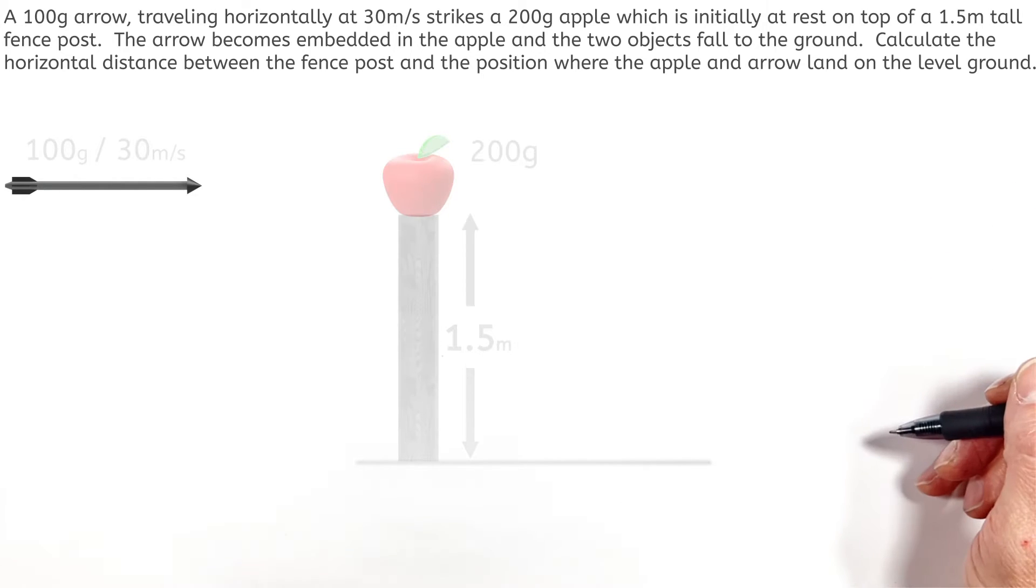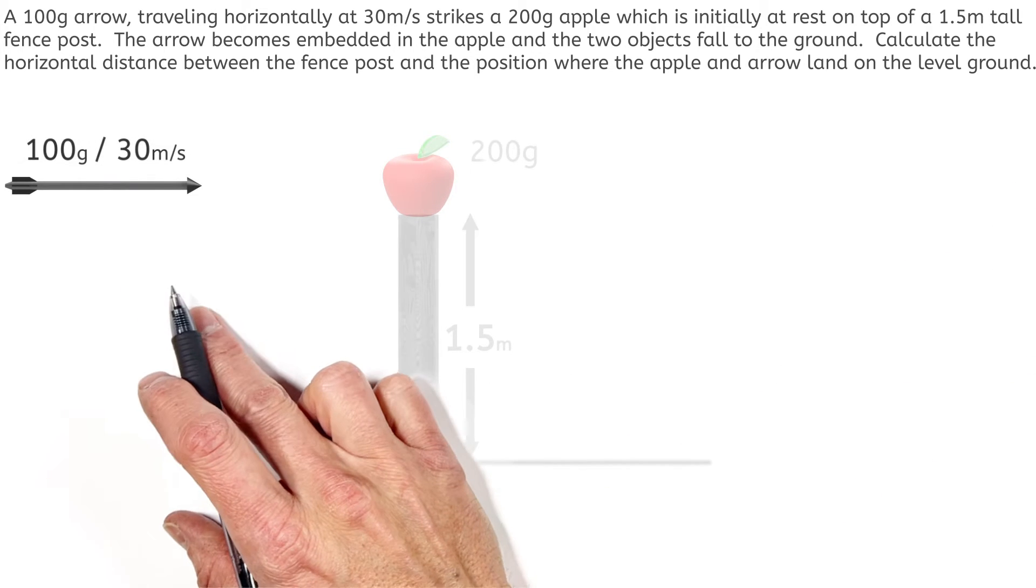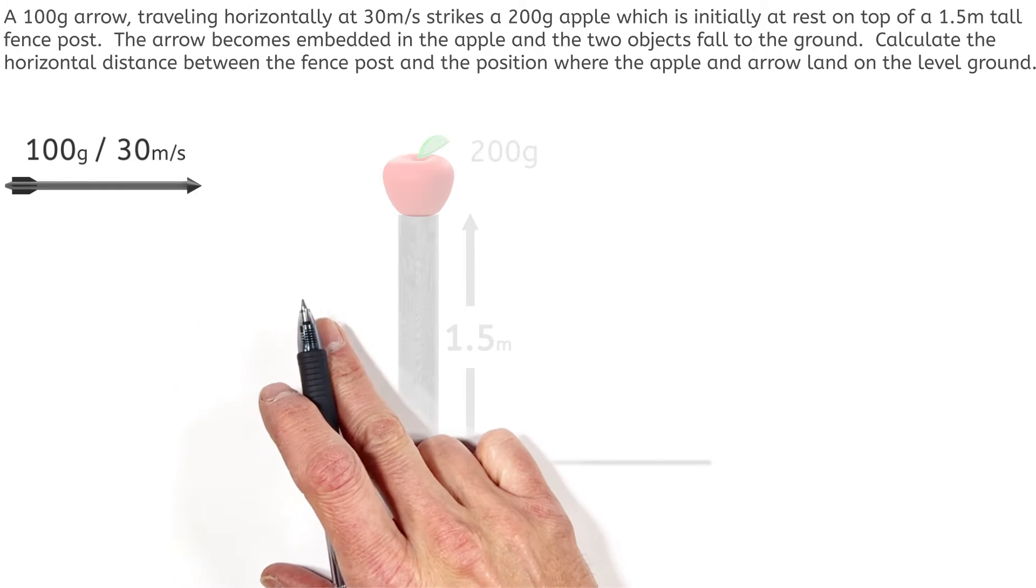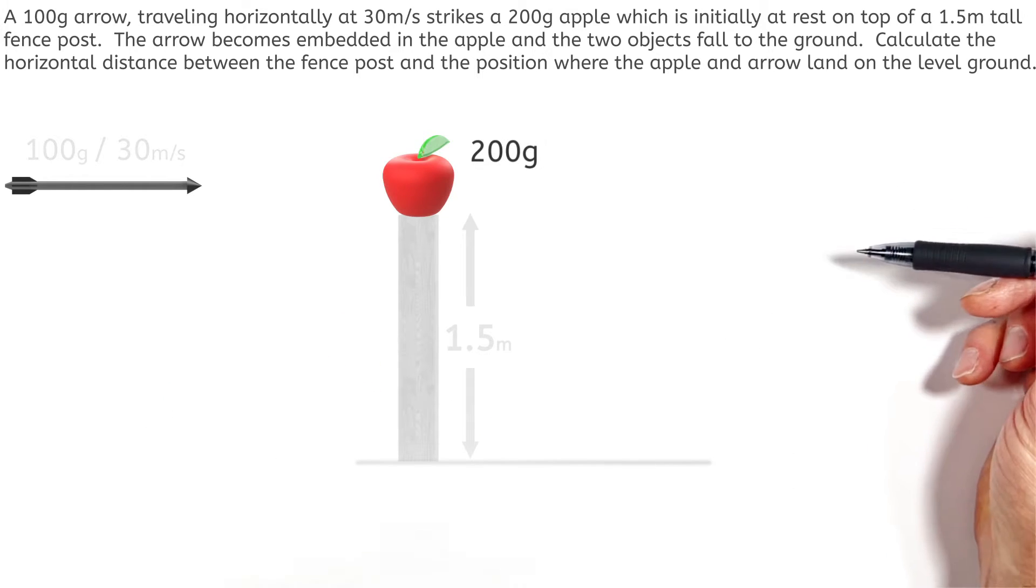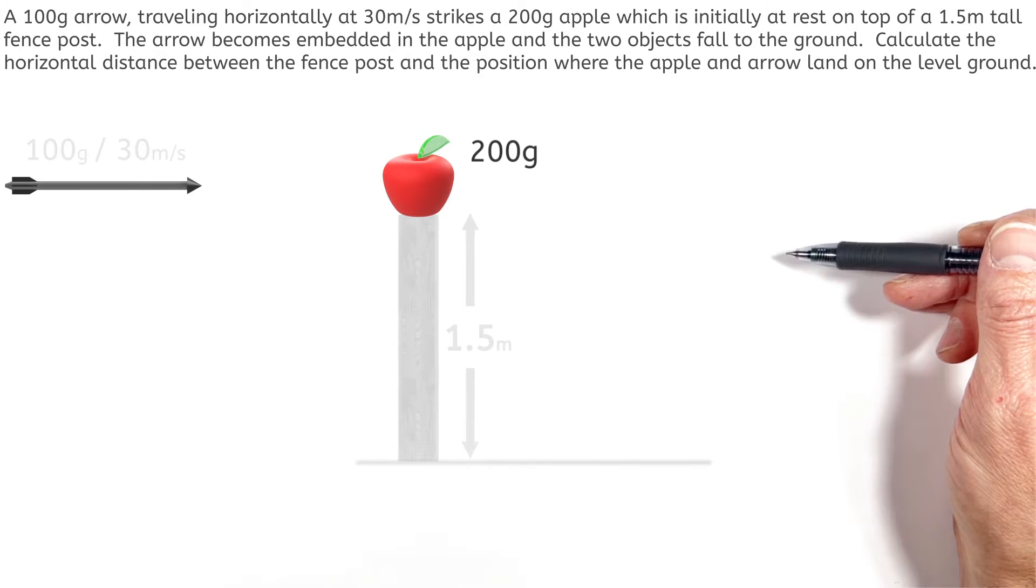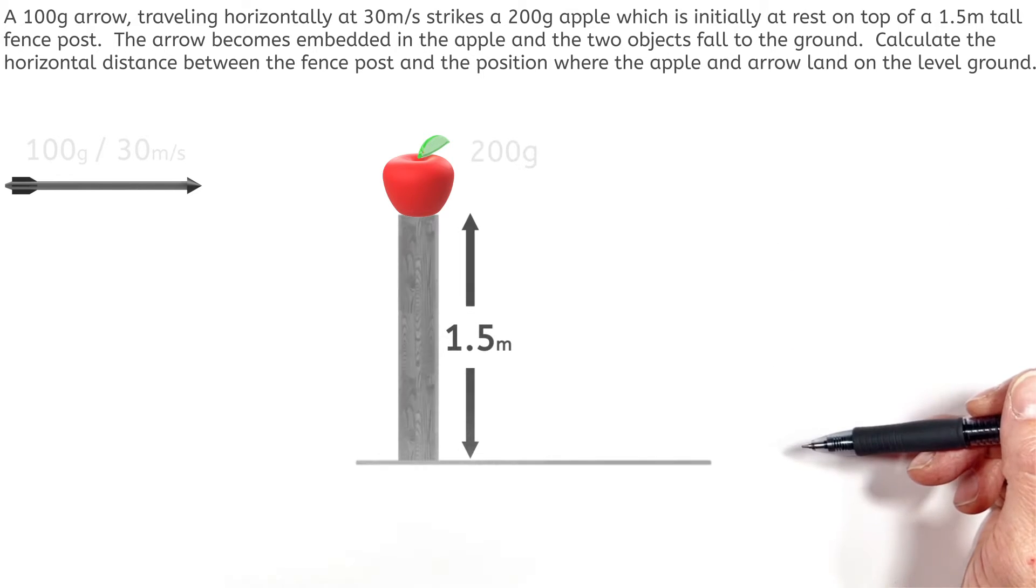Alright, today we're taking a look at a collision problem in which we have a 100 gram arrow traveling horizontally at 30 meters per second when it strikes a 200 gram apple, which is initially at rest on top of a 1.5 meter tall fence post.